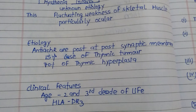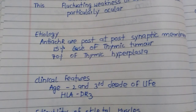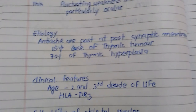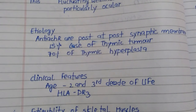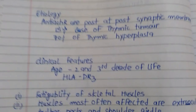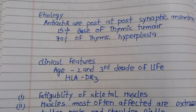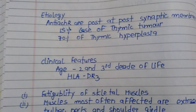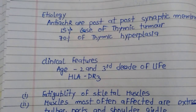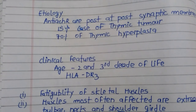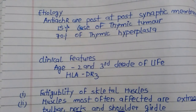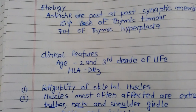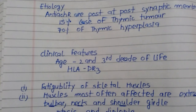Hyperplasia means an increase in the number of cells. Regarding clinical features, the commonly affected age group is the second to third decade of life, meaning 20 to 30 years of age is the most common presentation of this disease.